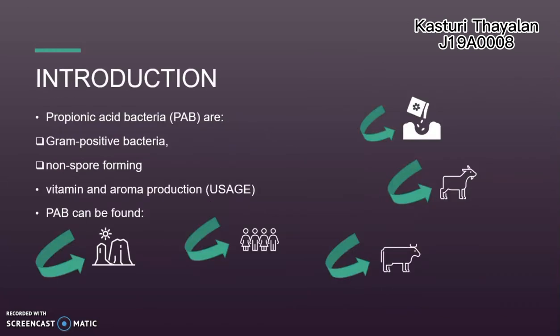Let me introduce what is propionic acid bacteria. Propionic acid bacteria are combined into the family Propionibacteriaceae, genus Propionibacterium. This genus is divided into two main groups based on their habitat: classical and skin, also known as cutaneous. Propionic acid bacteria are gram-positive bacteria, meaning they are non-motile, do not produce bacterial spores, and are also catalase positive.